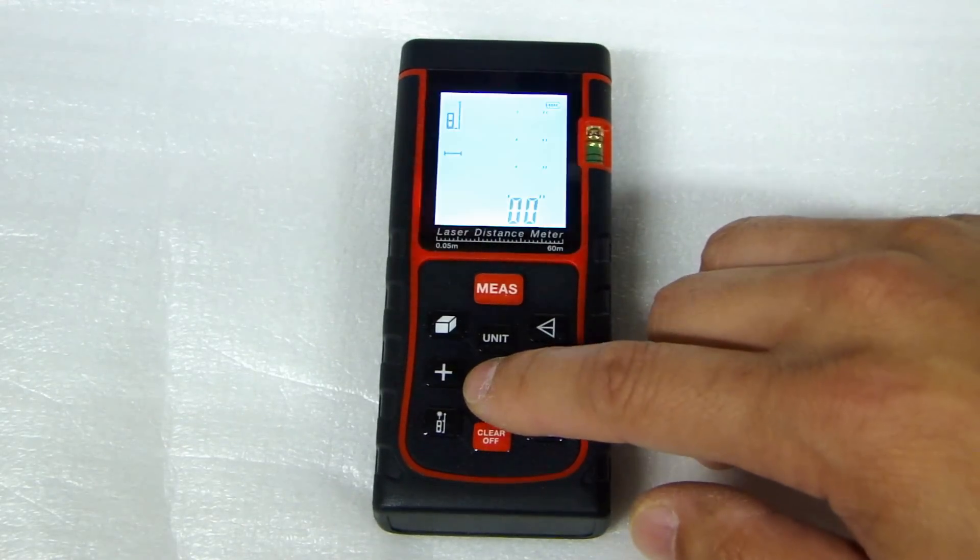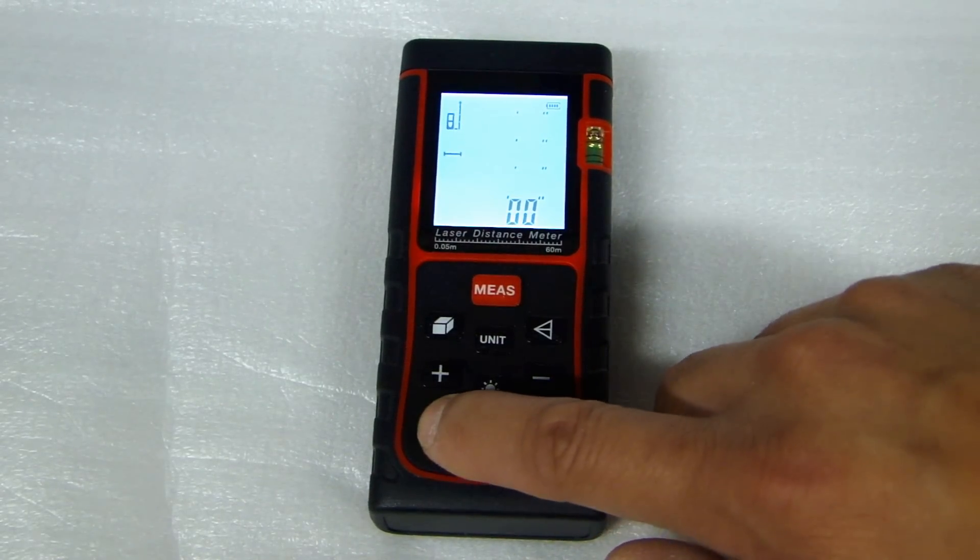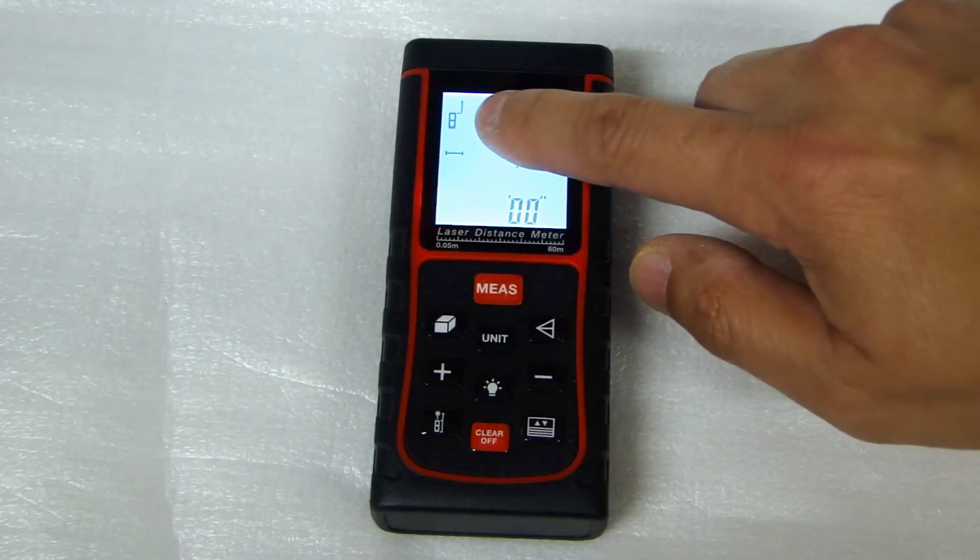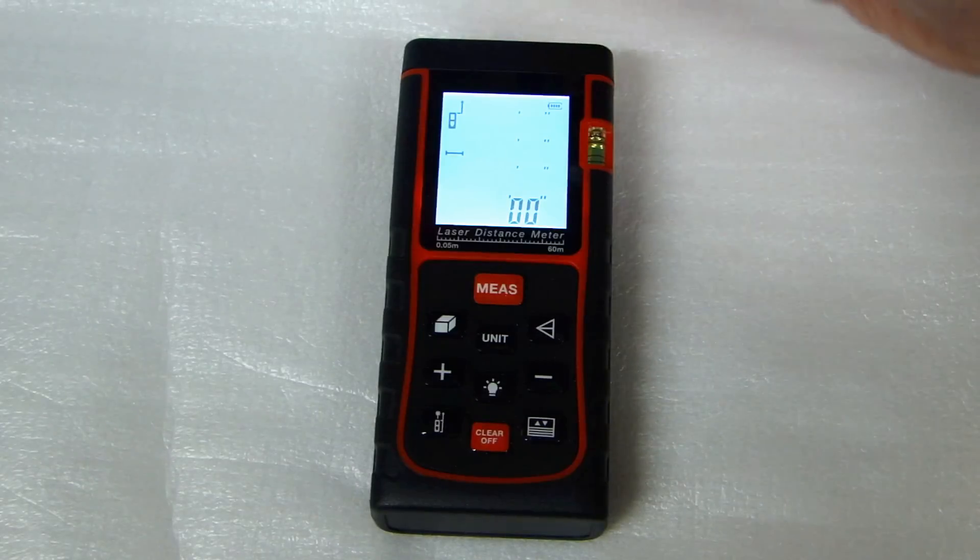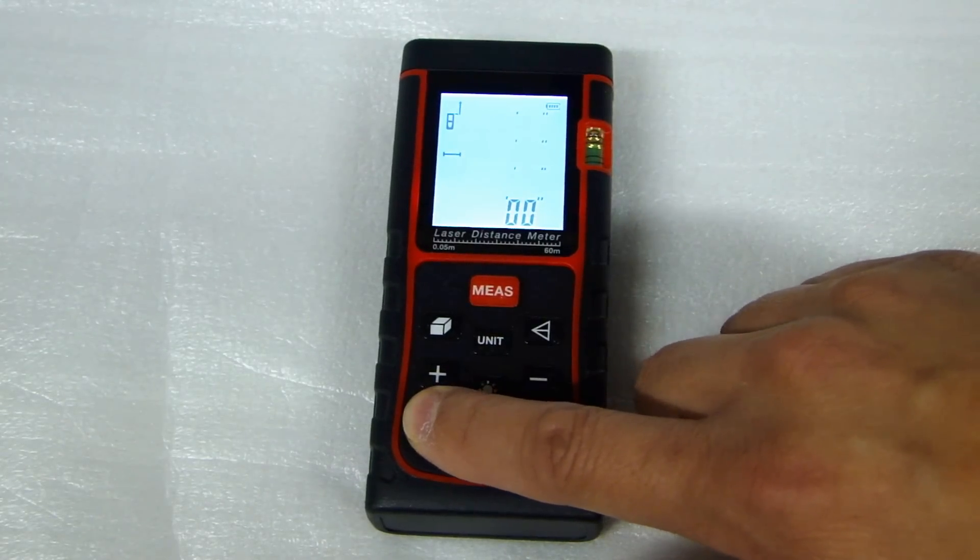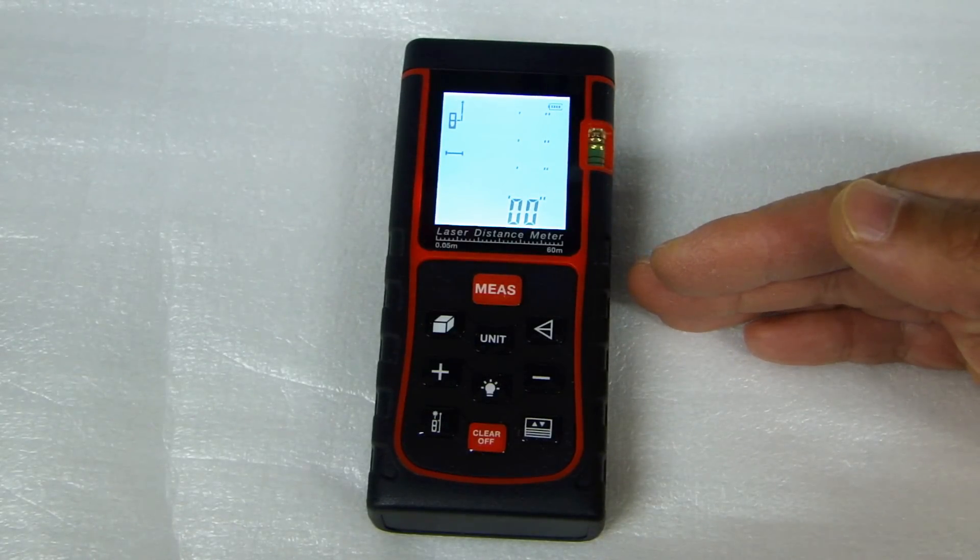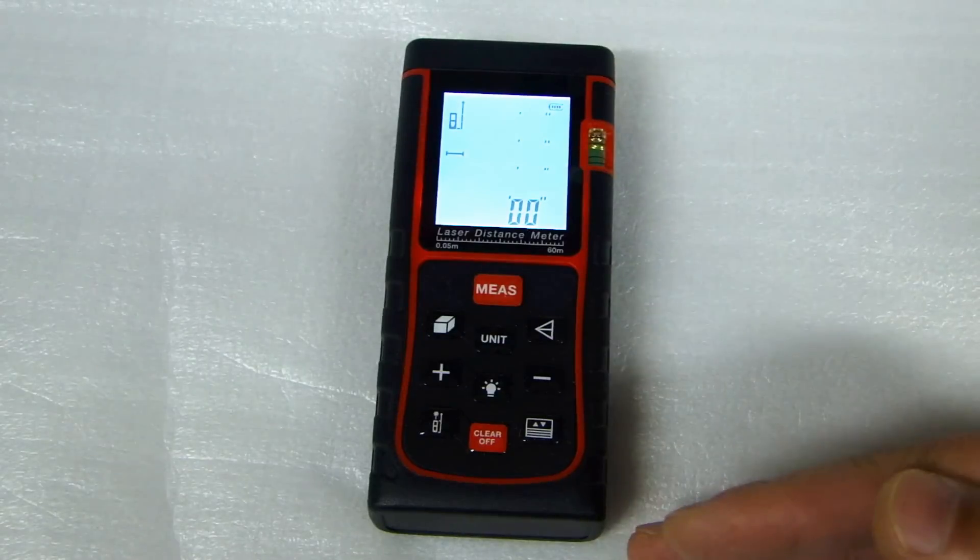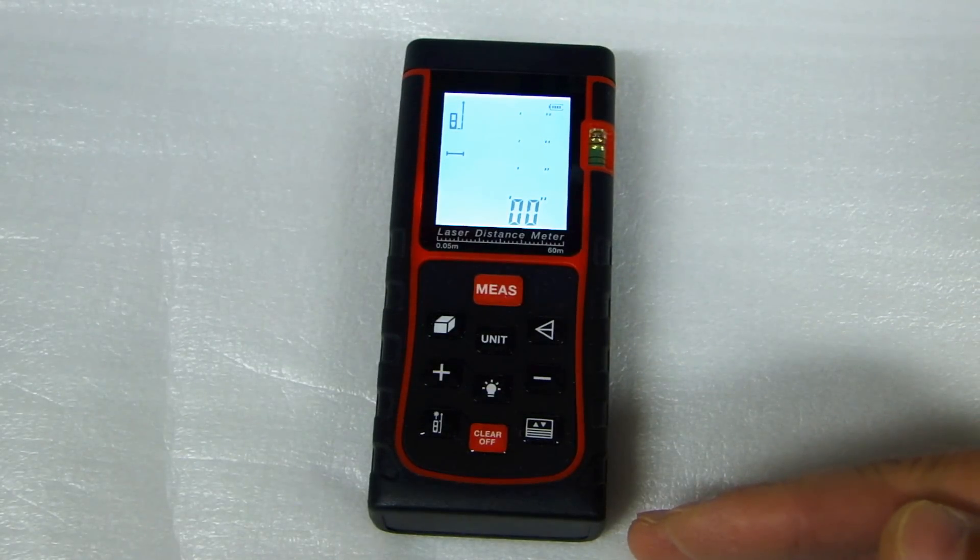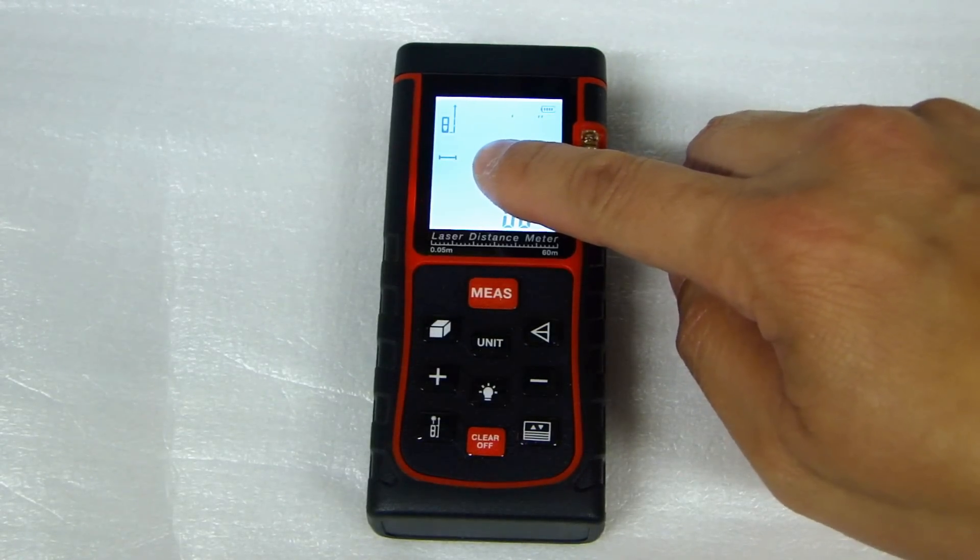And you can change that by pressing this button right here. If we press it once, now it will change to measuring from the top of the measuring tool to the wall that you're measuring. Now if I press it again, that line will now show the center of this measuring tool. Press it again, now that line will show it's measuring from the bottom of this measuring tool. This horizontal line here tells you it's measuring distance or the length.